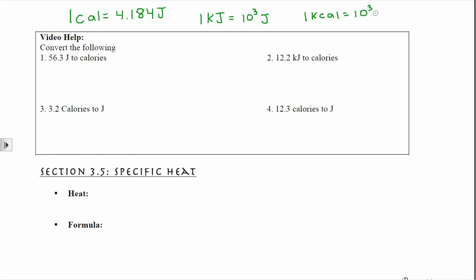The last relationship: notice this is little calories. When we're talking about calories that we eat, we're actually talking about a capital Calorie. One big Calorie equals 10 to the third little calories, or one kilocalorie. So when we say a capital Calorie, we are actually saying it's one kilocalorie.